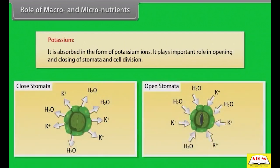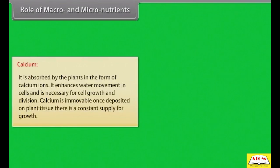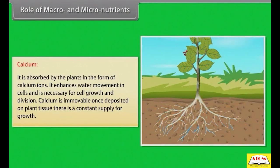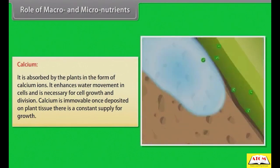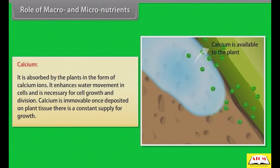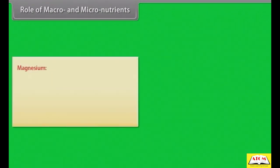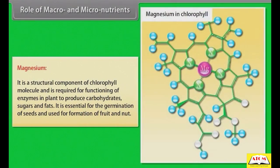Potassium: it is absorbed in the form of potassium ions. It plays an important role in opening and closing of stomata and cell division. Calcium: it is absorbed by plants in the form of calcium ions. It enhances water movement in cells and is necessary for cell growth and division. Calcium is immovable; once deposited on plant tissue, there is a constant supply for growth. Magnesium: it is a structural component of the chlorophyll molecule and is required for functioning of enzymes in plants to produce carbohydrates, sugars and fats. It is essential for germination of seeds and used in formation of fruit and nut.